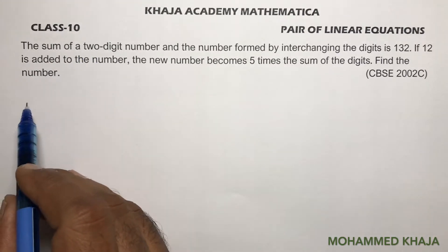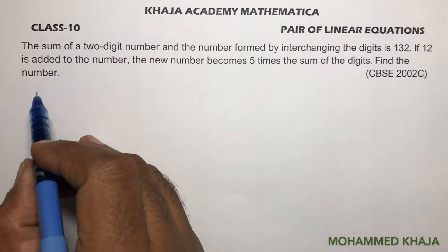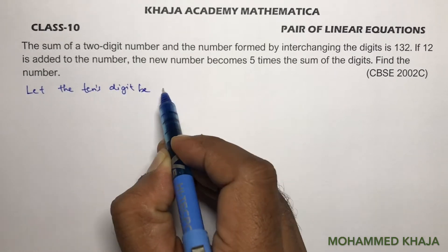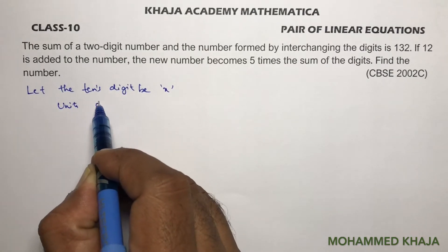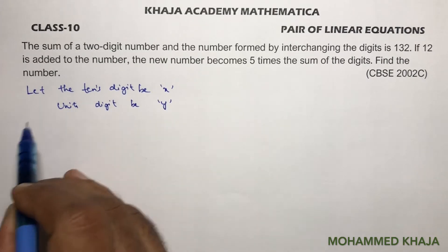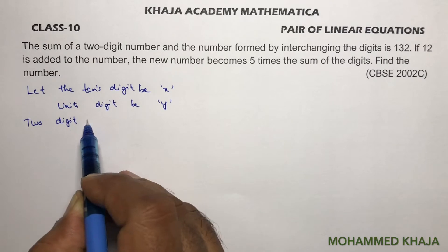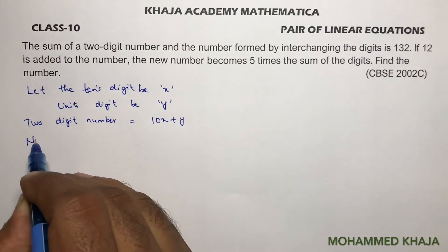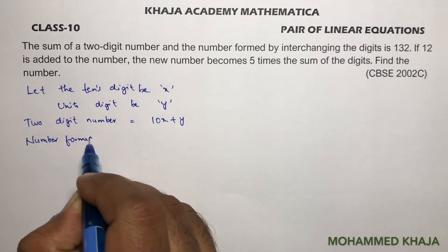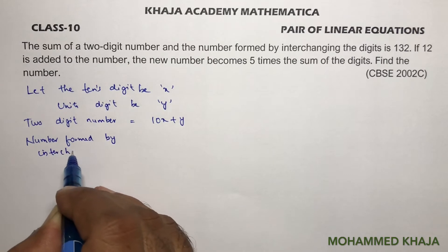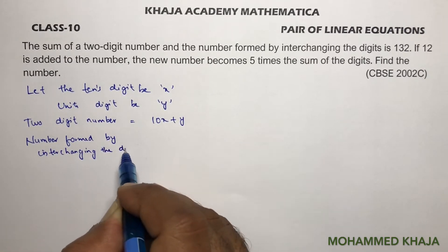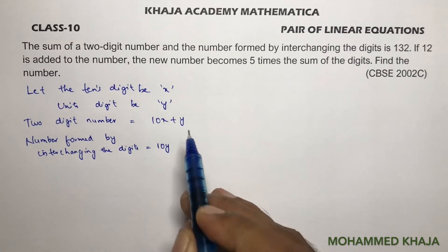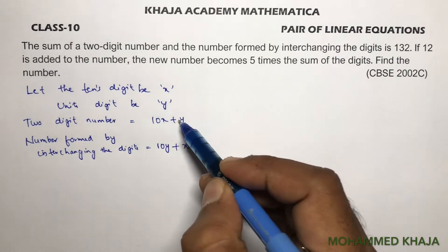This problem is based on a two-digit number. First, write four steps: let the tens digit be x and units digit be y. Then the two-digit number will be 10x + y. The number formed by interchanging the digits — in place of x write y and in place of y write x — gives 10y + x. These four steps make two-digit number problems easy.